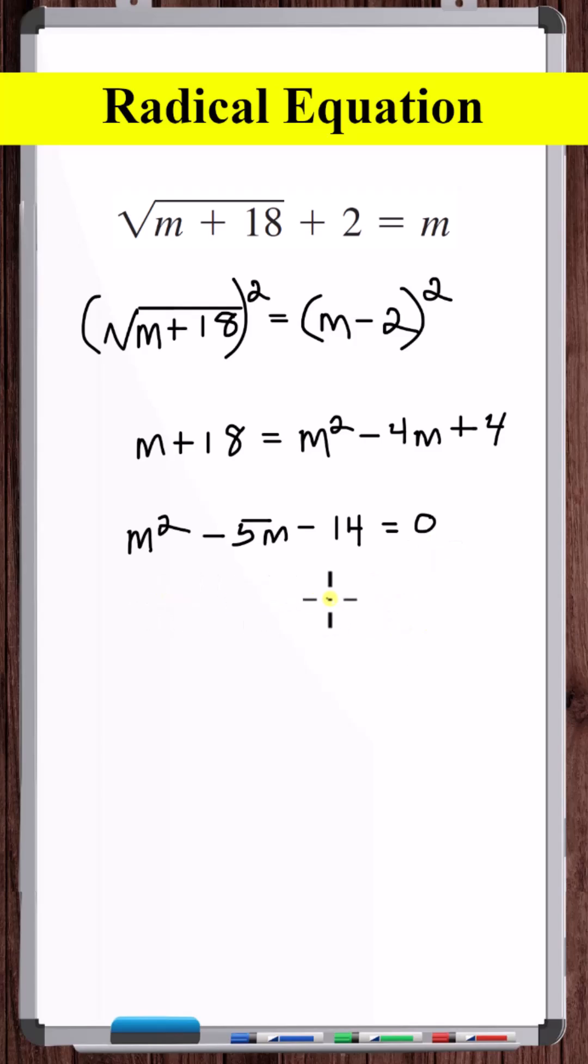Now let's solve this quadratic equation. We can factor this. 7 times 2 is 14. Minus 7 plus 2 is minus 5. Minus 7 times positive 2 is minus 14. So m is equal to 7 and m is equal to minus 2.